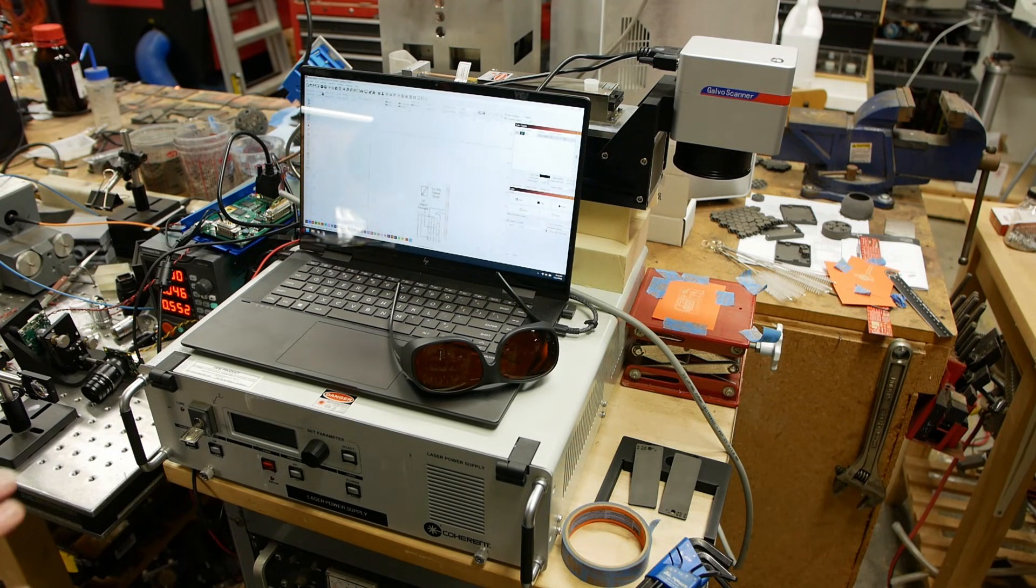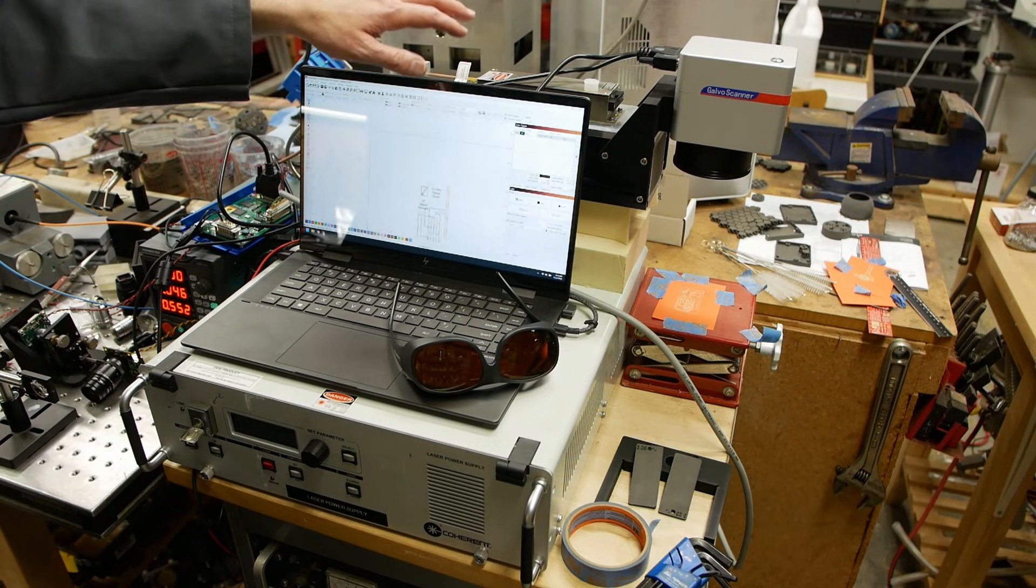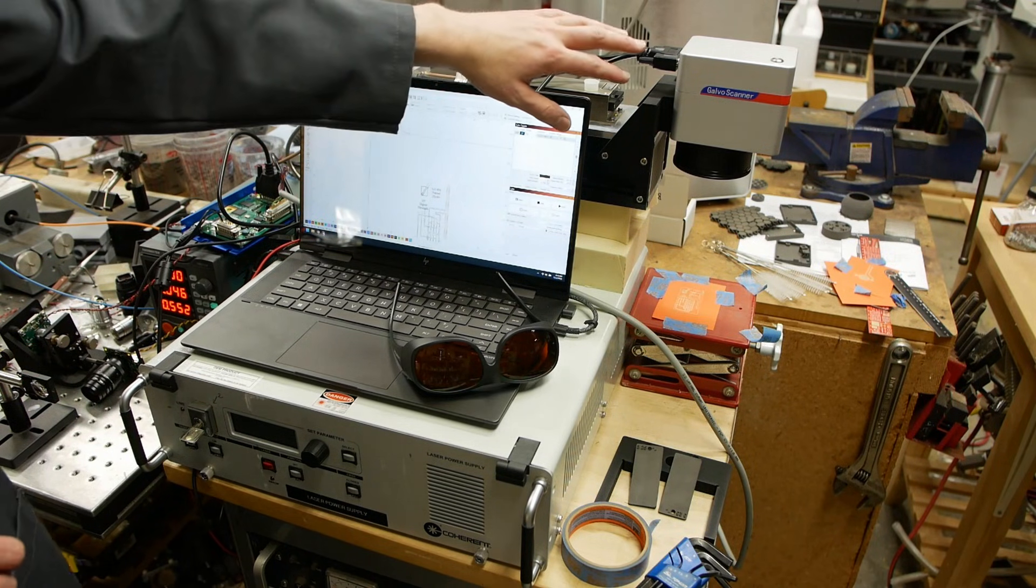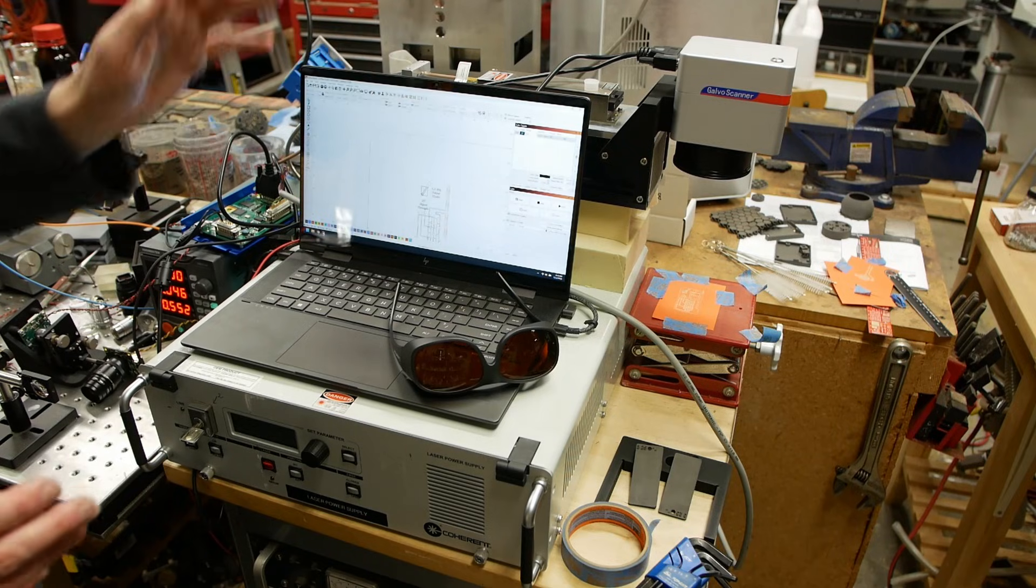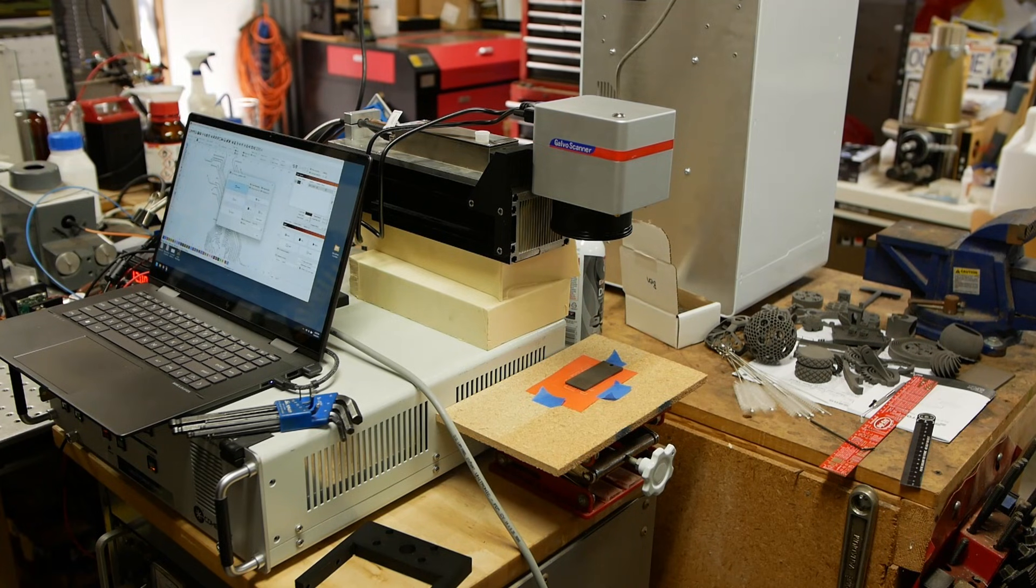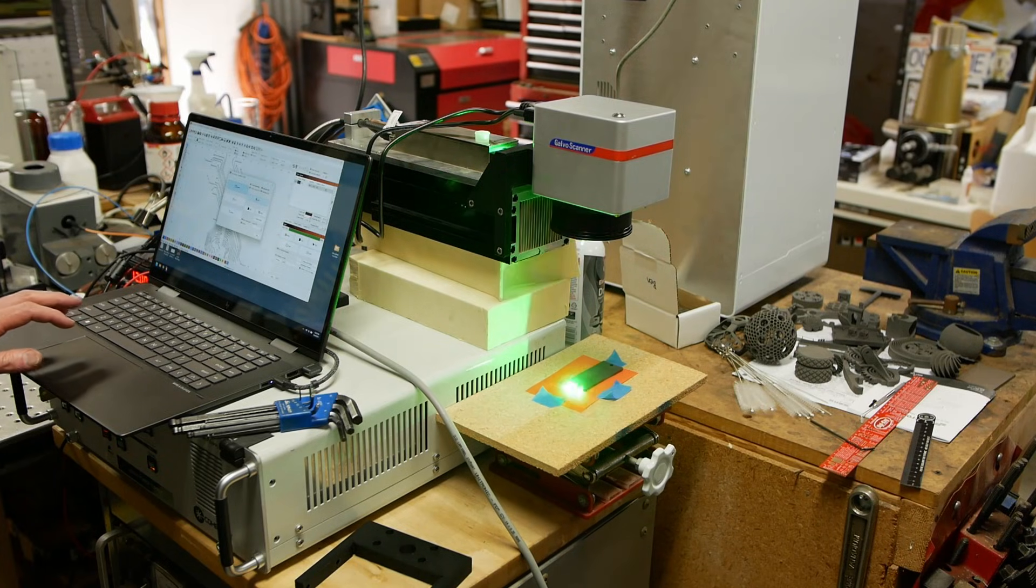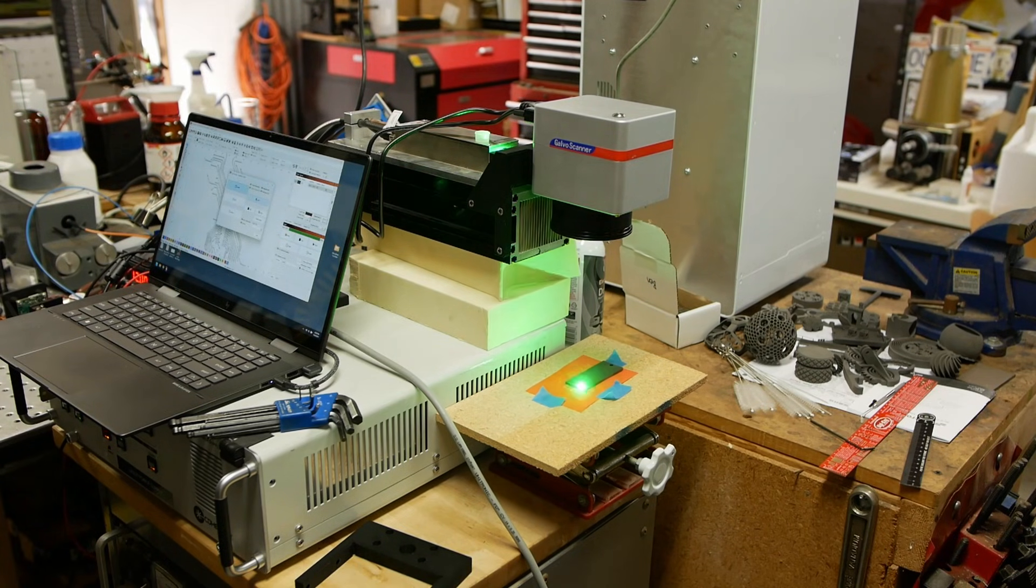And so I contacted CloudRay and basically asked them for the whole system, except the laser itself, and asked them to coat the optics at 532 nanometer. What do you know? They actually sent the entire thing right away without any complaints whatsoever. So I got a green Galvo scanning system with the F theta lens, the scanning head, and the controller. And they even included, well, I paid for it, but they included LightBurn. So this whole part came together pretty quickly and was a fairly difficult thing to build.